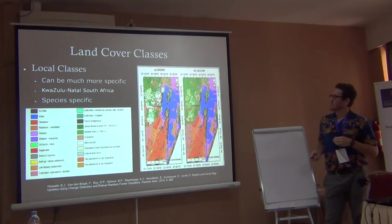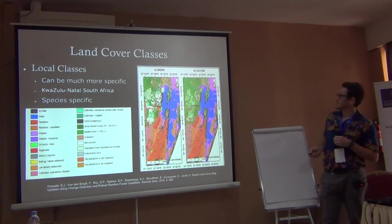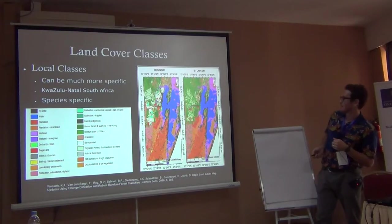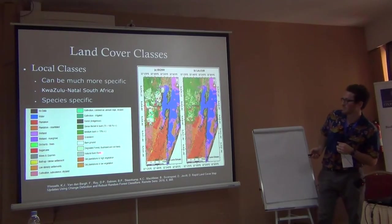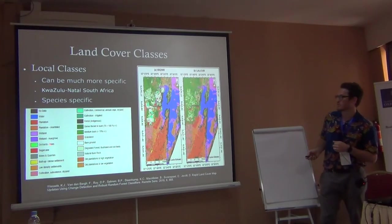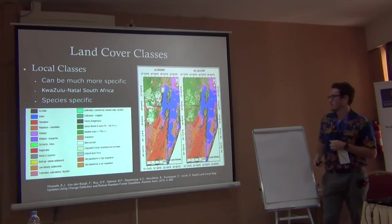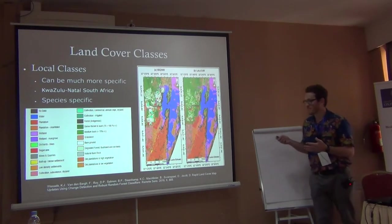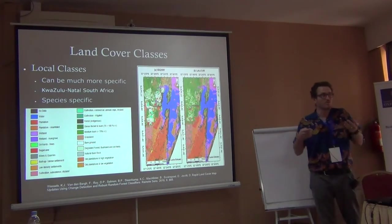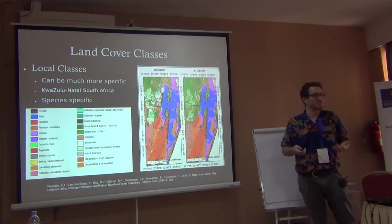Here's another example from South Africa with specific species and land types — sugar cane, orchards. They used a very specific classification that was useful for their particular questions. If you have a very specific question, you could classify a land cover map to answer it if you need to know about a very specific land cover type.